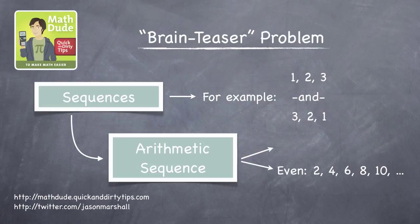That's a sequence where each element differs from the previous one by the same constant value. For example, each of the even and odd positive integers differs from the previous integer in the sequence by two.